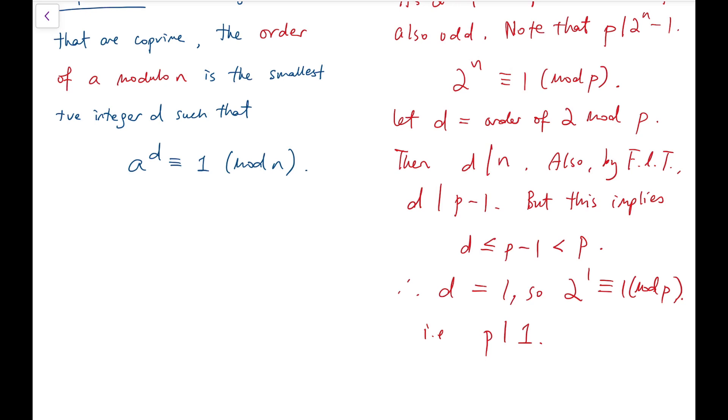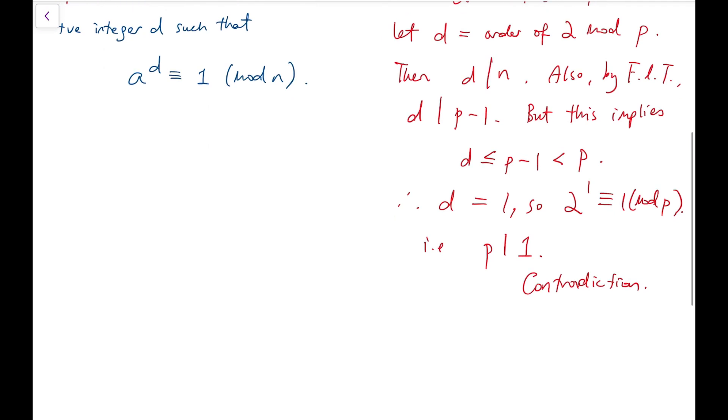So the only thing that can happen is that our assumption is wrong. So we have a contradiction. So there is no such number n larger than 1 that divides 2 to the power n minus 1.